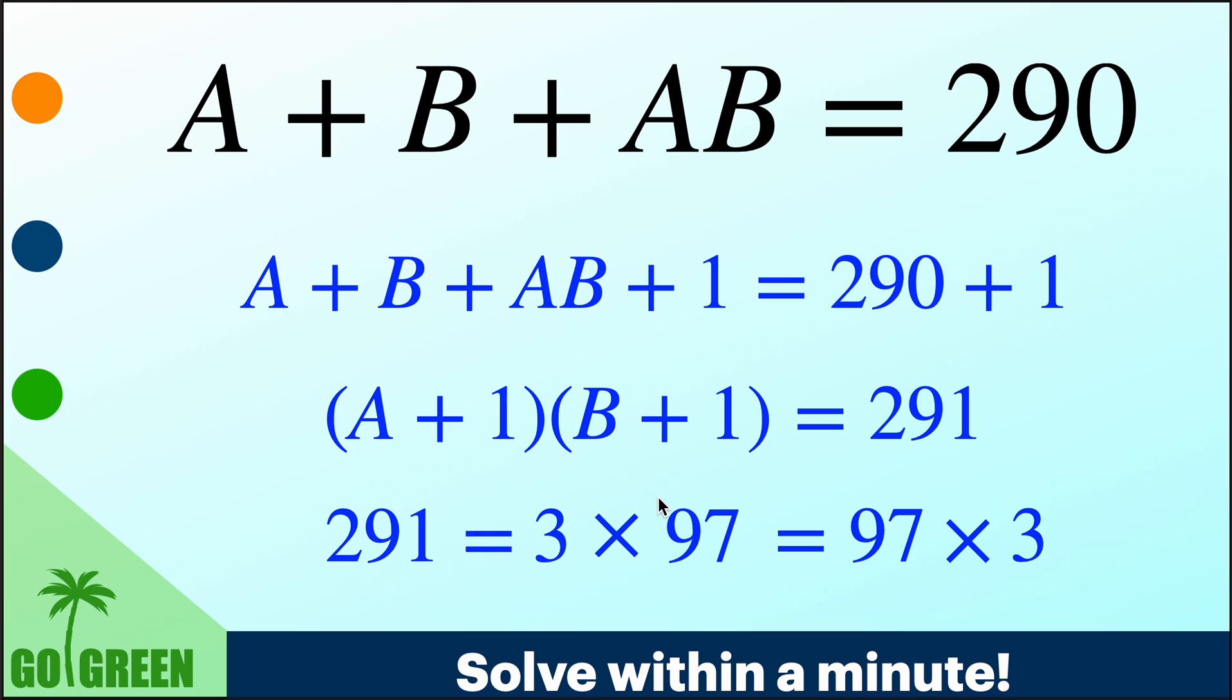Except this one of them is 1. So 291 is 3 into 97 or 97 into 3, there is no other.